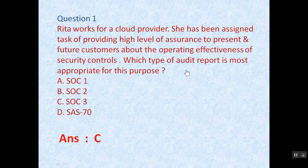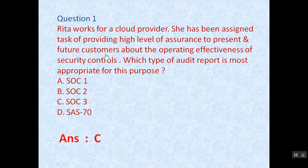Now let us look at the answers. For question number 1, the main keyword is 'future customers,' which means the report is unrestricted and publicly available. SOC 3 is applicable for this criteria. So the correct answer is C.